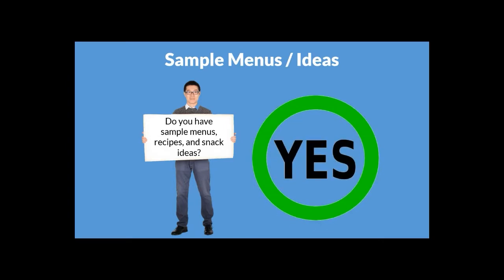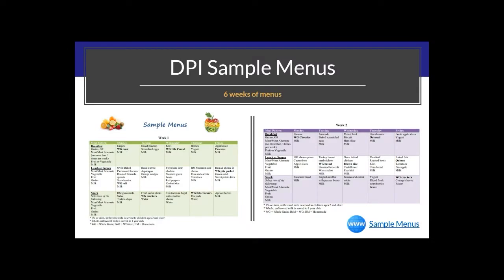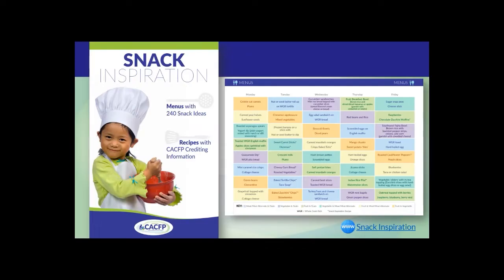Our next question is: do you have sample menus, recipes, and snack ideas? Yes, we have a lot of different resources and ideas to share. The DPI has six weeks of sample menus for breakfast, lunch, supper, and snack. You can use the menus as they are or pick and choose different meals to incorporate into your own menus. For snacks, there is a new resource called Snack Inspiration, which is the revised Snacks Without Crackers. It includes 240 different snack ideas to help offer a variety of foods throughout the week, along with recipes that have crediting information so you know how much to serve to meet the CACFP meal pattern requirements.